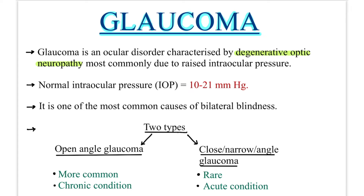Glaucoma is an ocular disorder characterized by degenerative optic neuropathy — pathology associated with the optic nerve, most commonly due to raised intraocular pressure. The normal intraocular pressure is 10 to 21 mmHg; above 21 it is raised, which can cause optic neuropathy and thus glaucoma. It is one of the most common causes of bilateral blindness. There are two types: open-angle glaucoma and closed/narrow-angle glaucoma. Open-angle is more common — 95% — and is a chronic condition, whereas closed-angle is rare, acute, and an emergency.